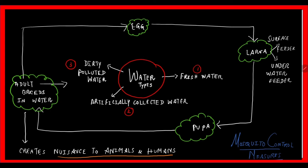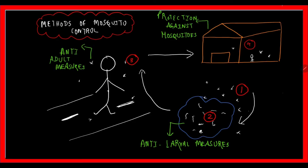First, the life cycle of mosquitoes needs water. Based on water types—fresh water, artificially collected water, and dirty water—different mosquitoes breed. In controlling, we must break the life cycle and prevent mosquito bites. The methods are: anti-larval measures, anti-adult measures, and protection against mosquitoes.